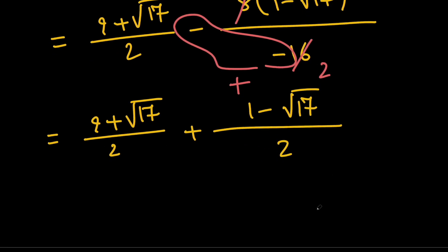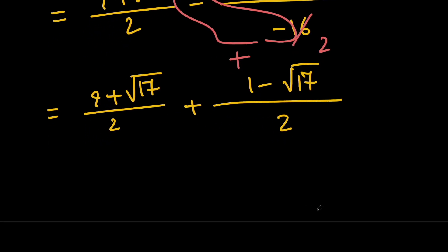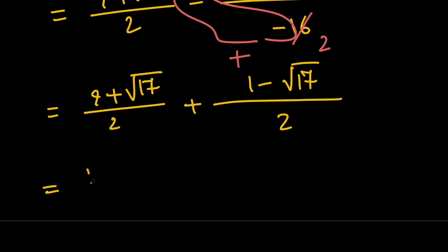Now if we add these two fractions, we're going to end up with 10 divided by 2, which equals 5. So our expression is equal to 5, and this means that we are done with the first method.